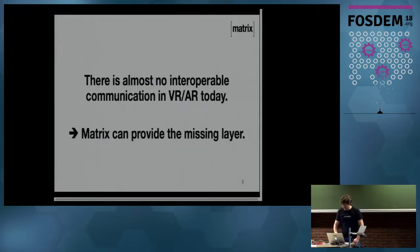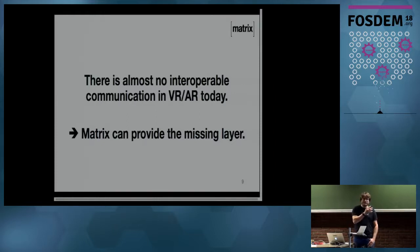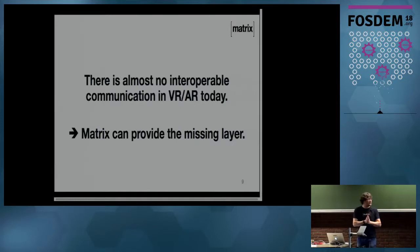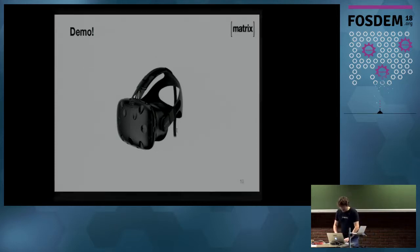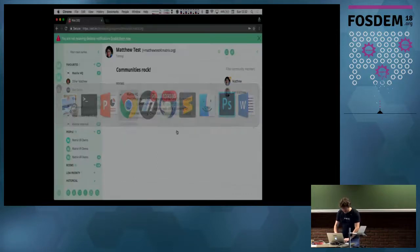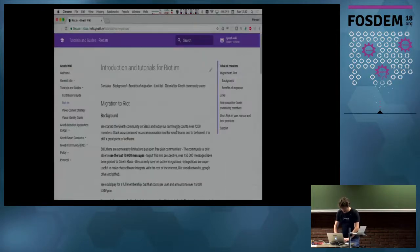Now, AR and VR — there's basically no interoperable communication layer today. And one of the things we'd love to do in Matrix is to provide a way for people to talk, whether it's by VoIP or video or just a kind of decentralized interaction layer for AR and VR. We worked on this last year and basically built a demo that you can use right now, in fact, on Matrix.org slash VR demo.